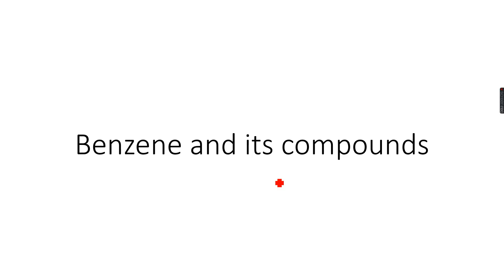Welcome to A-level chemistry. Our topic for today is benzene and its compounds. Before we delve into this topic, let's remember that what we did in AS-level chemistry in organic chemistry were aliphatic organic compounds or aliphatic hydrocarbons. What we are going to do now in our A-levels are aromatic organic compounds.